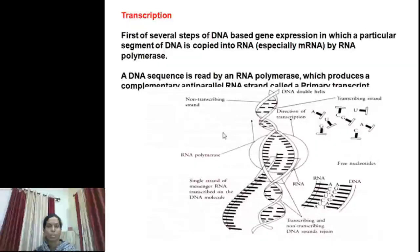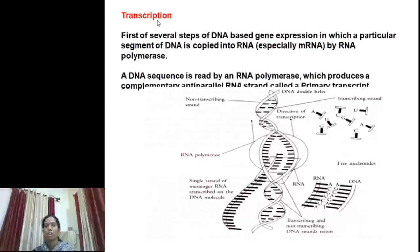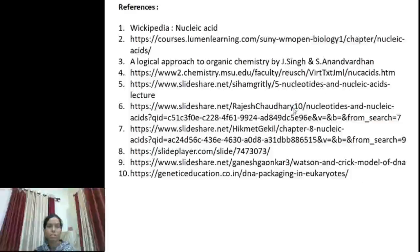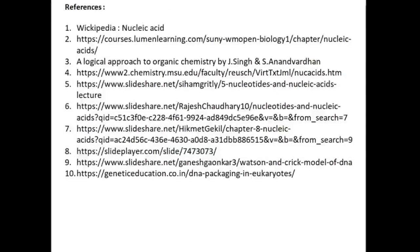The third process is transcription. Transcription is the process in which the gene DNA sequence is transcribed to make an RNA molecule. DNA gets unwound, and on that unwound part, the formation of an RNA strand takes place, which is complementary to the sequence of DNA. This process is carried out by RNA polymerase. These are the references.